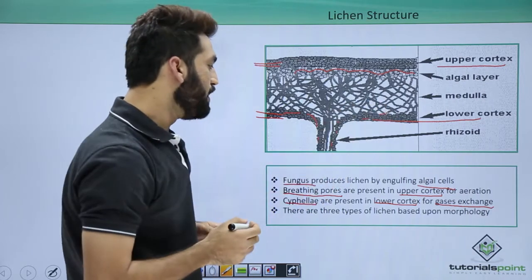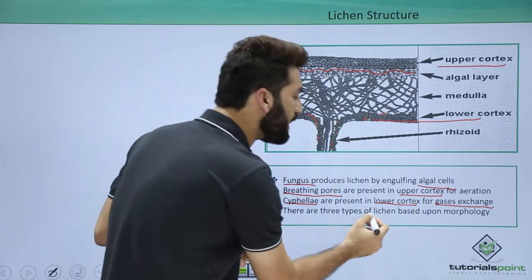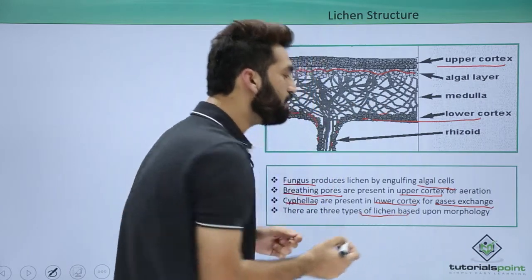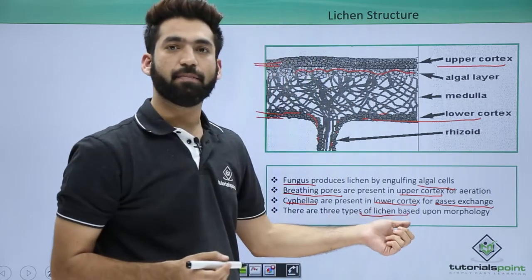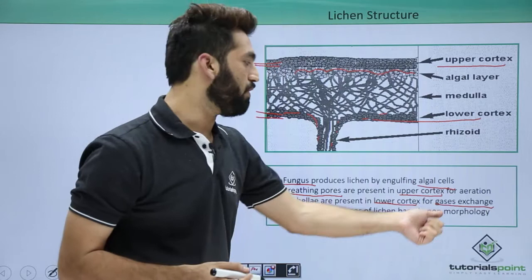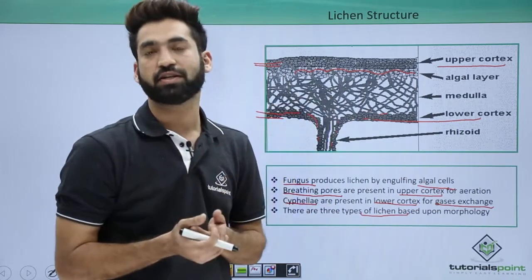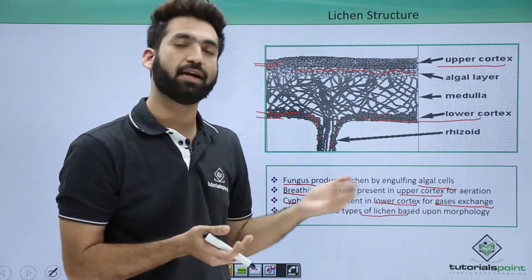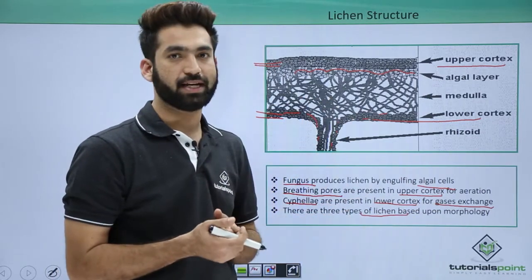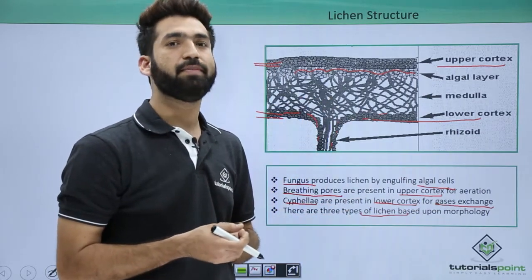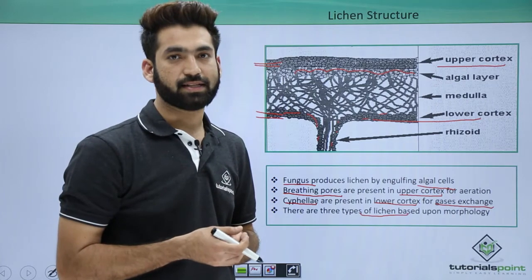There are three types of lichen, depending upon the morphology and surface structures of lichen. We'll be discussing these three types in the next session.